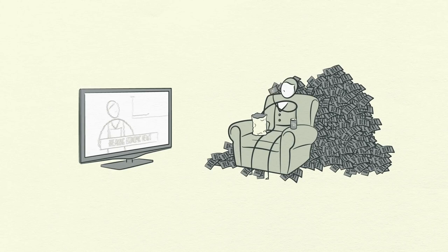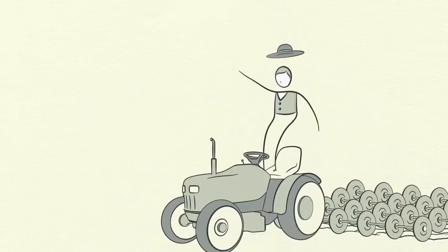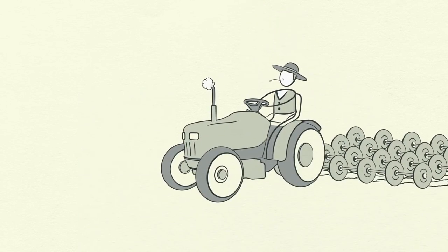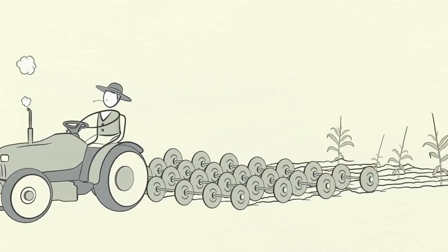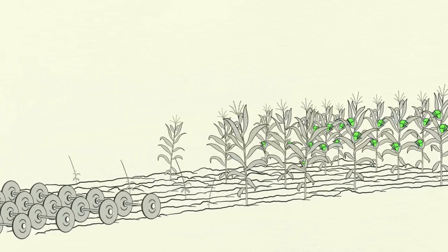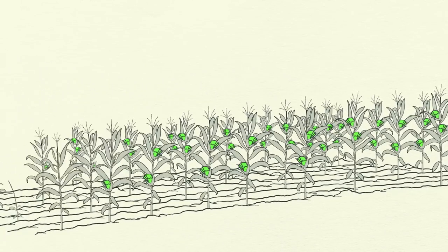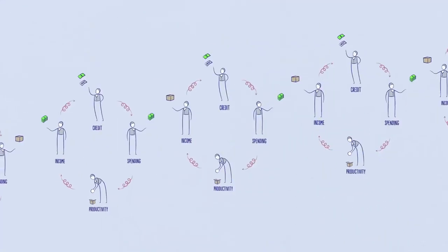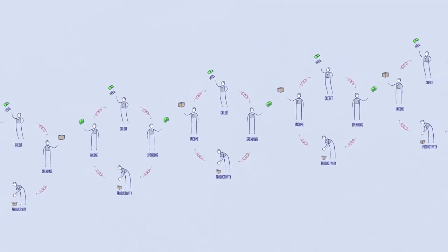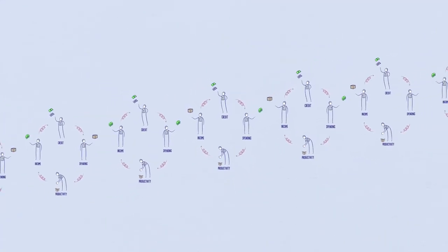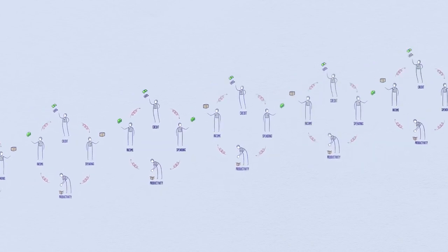For example, if you borrow money to buy a big TV, it doesn't generate income for you to pay back the debt. But if you borrow money to, say, buy a tractor, and that tractor lets you harvest more crops and earn more money, then you can pay back your debt and improve your living standards. In an economy with credit, we can follow the transactions and see how credit creates growth.